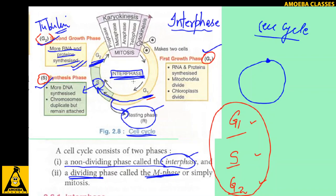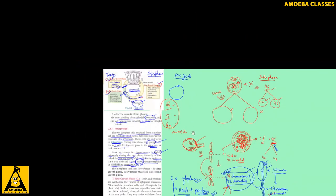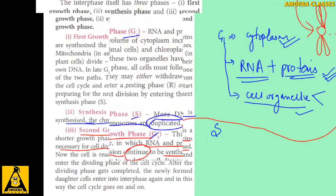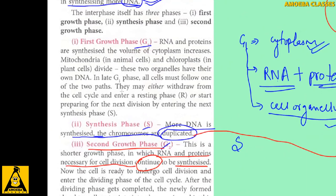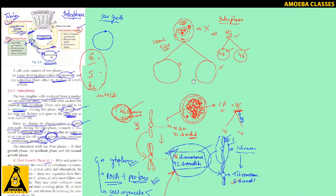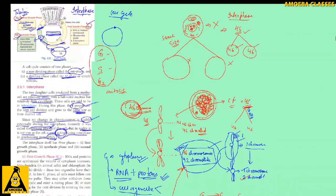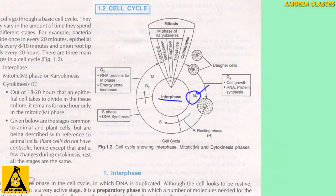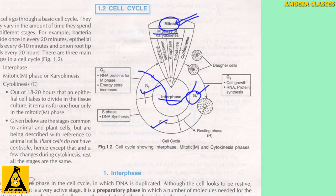Spindle fibers will be discussed in the next video. You can pause and read the content at any time. Now let's look at the same content from the Sarita Agarwal book for additional clarity. The same diagram appears: G1 phase, then S phase, then G2 phase in interphase, followed by the M phase (mitotic phase), after which two daughter cells form and re-enter interphase — completing the cell cycle.